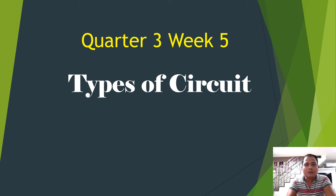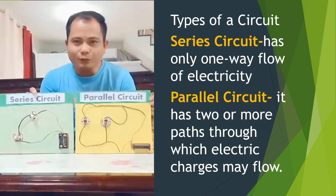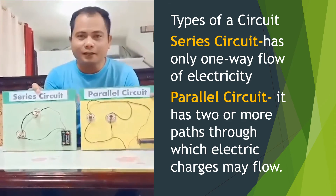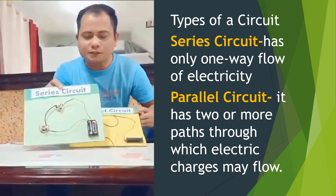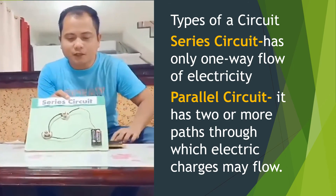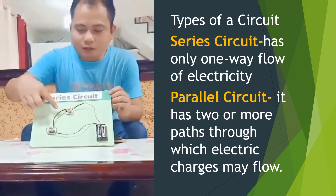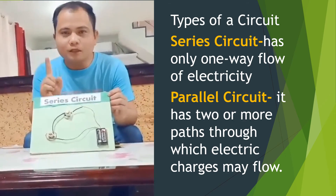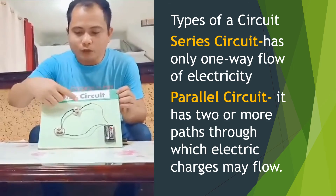Welcome to Quarter 3, Week 5: Types of Circuit. We are going to compare a series circuit and a parallel circuit. In a series circuit, looking at the arrangement of the wires, there is only one path — meaning the electricity has only one way to travel to the bulbs.